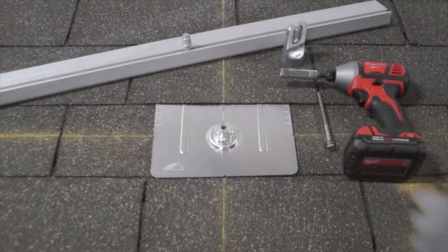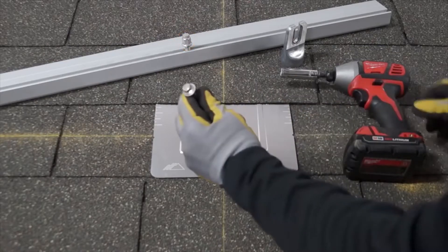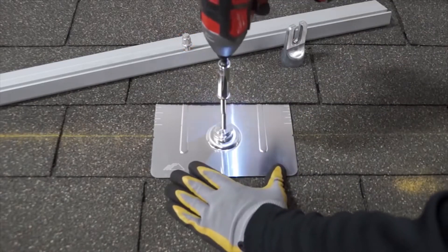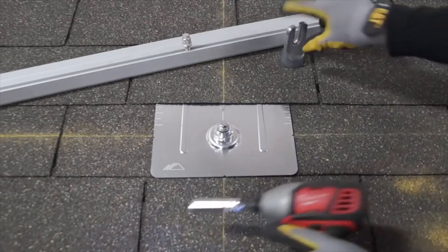Once centered, you drive the custom lag bolt with the same socket as the rail. In just seconds, you're able to drive down the lag and snap on the cap.